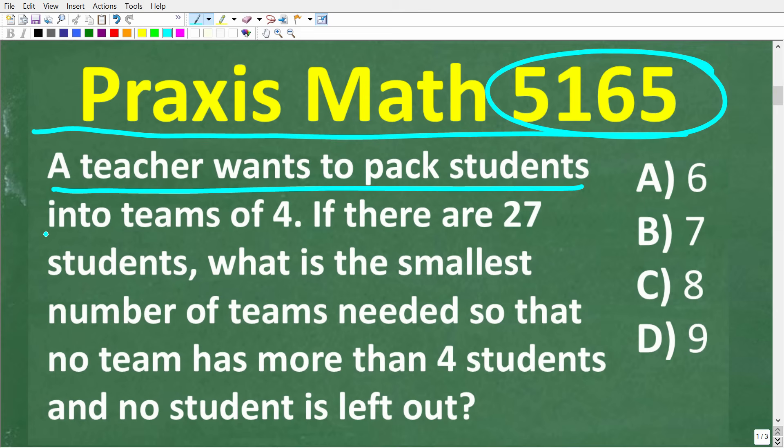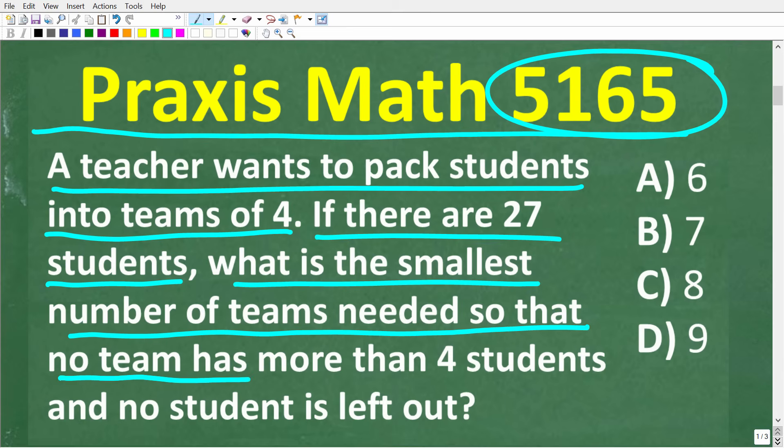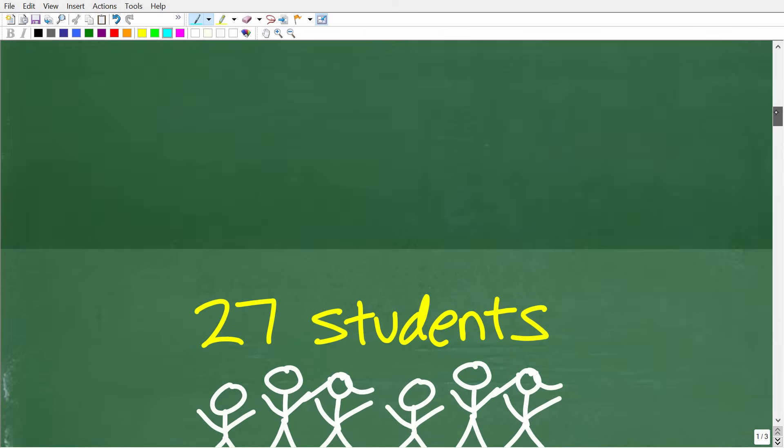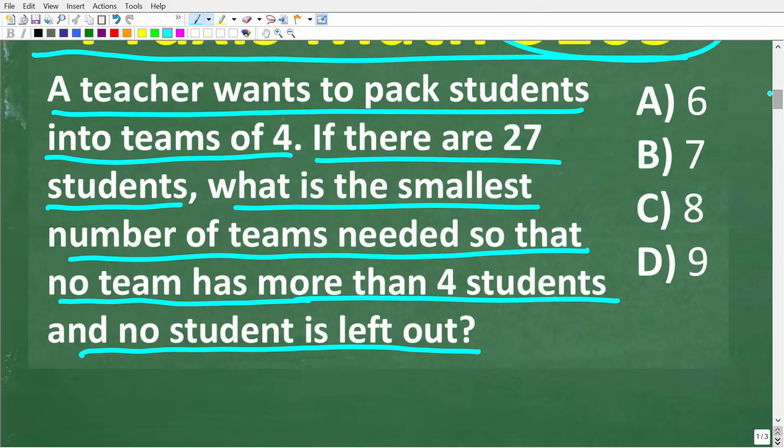A teacher wants to pack students into teams of four. If there are 27 students, what is the smallest number of teams needed so that no team has more than four students and no student is left out? So if you're not quite sure you understand the question, just take a quick moment to maybe model the problem. We have 27 students. So I'm just going to quickly write out 27 students. And the problem says that we want to break this up into teams of four. A teacher wants to pack students into teams of four. And we have 27 students.